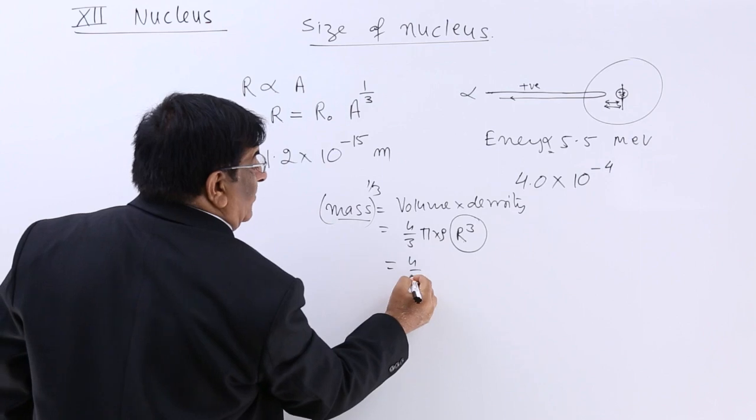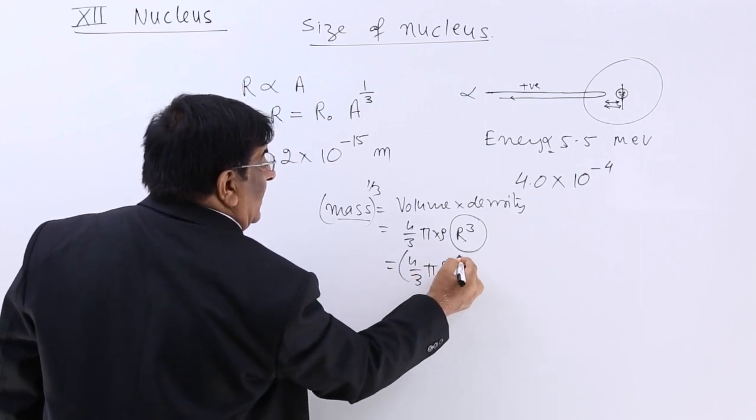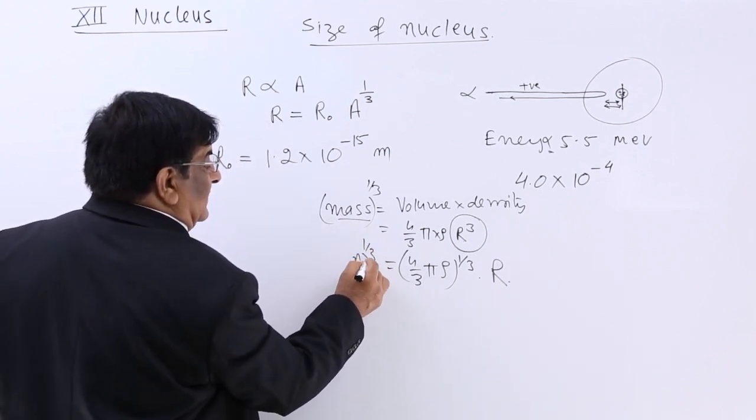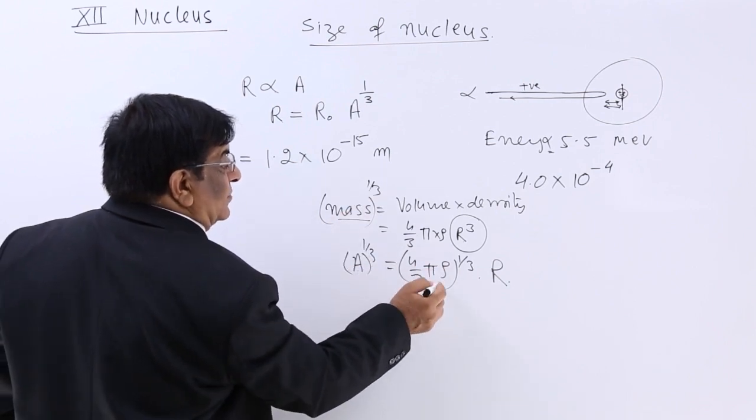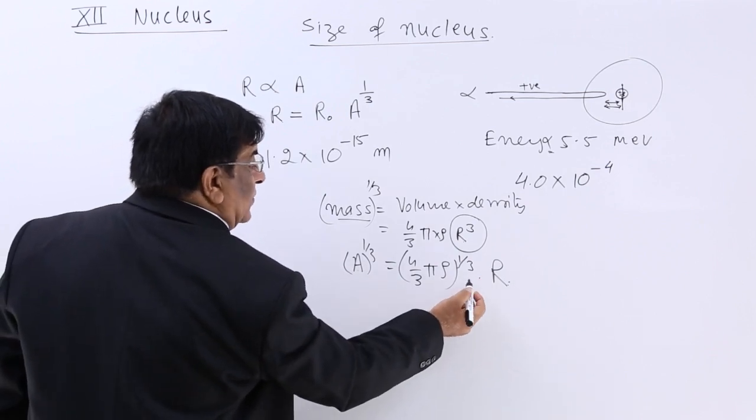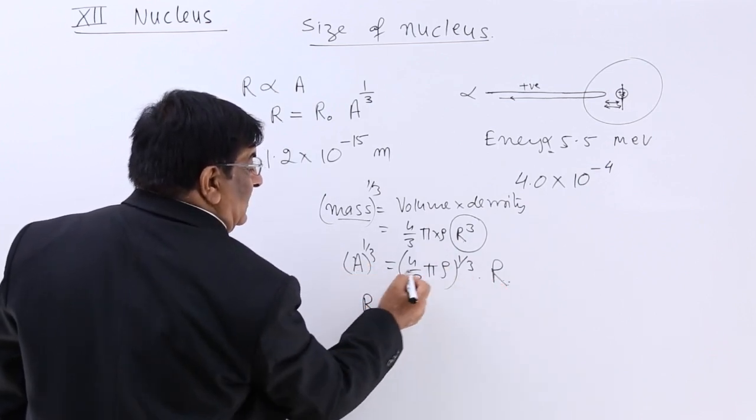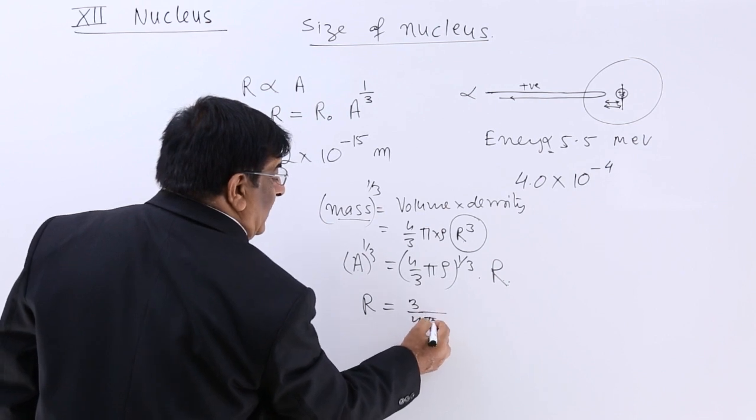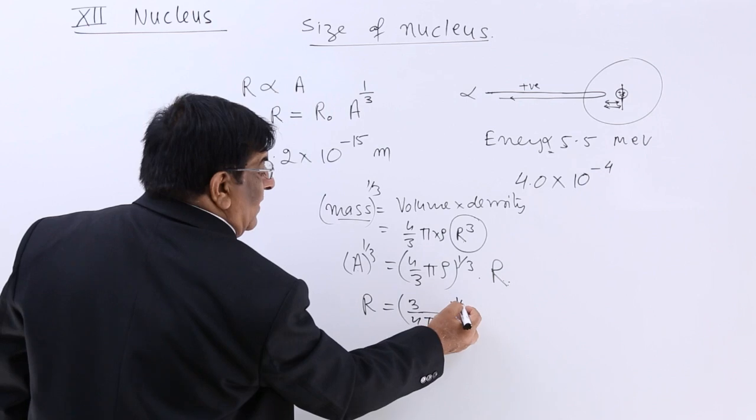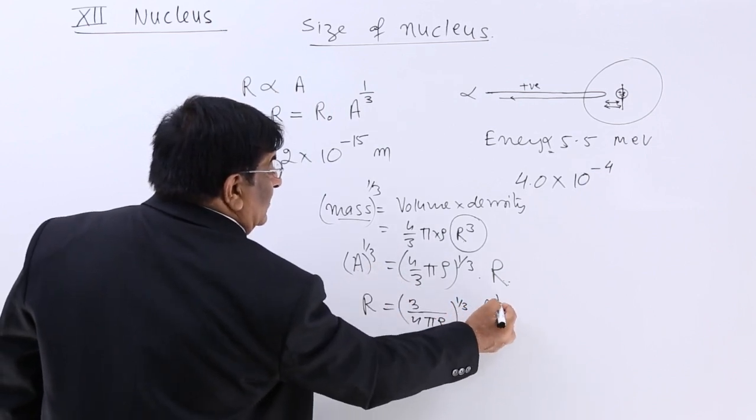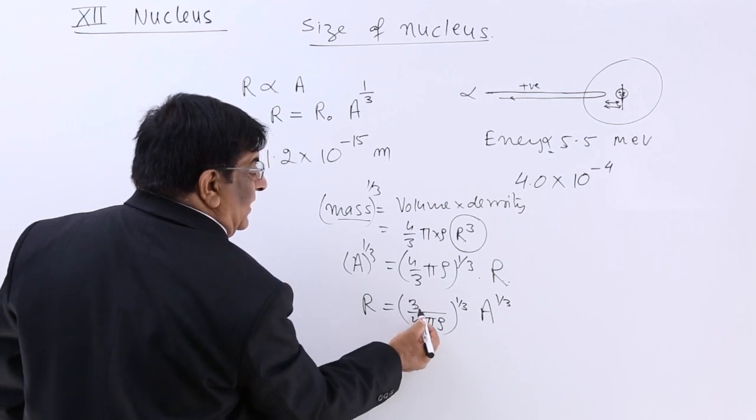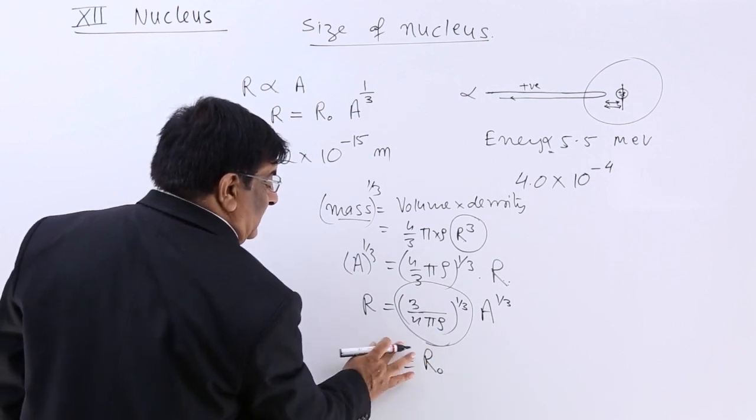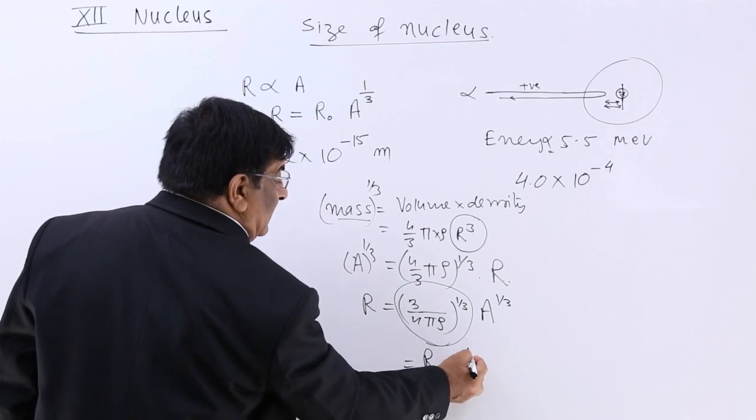Then we get this 4 upon 3 π ρ to the power one-third into R. So this mass is atomic mass A. Atomic mass to the power one-third is equal to this into radius. So radius is proportionate to A to the power one-third is equal to 3 upon 4π ρ to the power one-third multiplied by A to the power one-third. Now here density is a constant, π, 4, 3 all are constant, and this value we write it as a constant R naught. So this is R naught A to the power one-third.